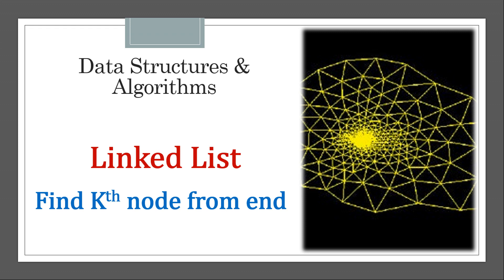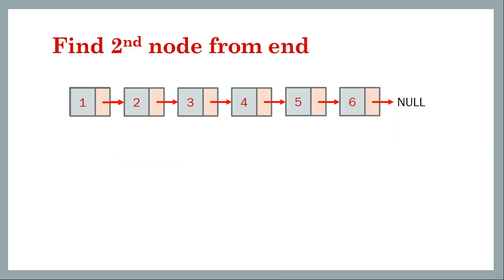In this lesson we will see how to find the kth node from the end of a linked list. We have a singly linked list and let's say we want to find the third element from the end. The first element from the end is 6, the second is 5, and the third is 4. So in this case we should return 4 if k is 3.